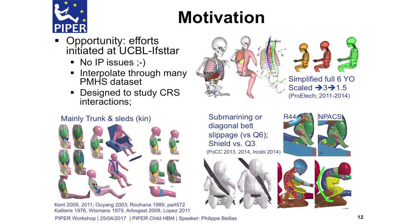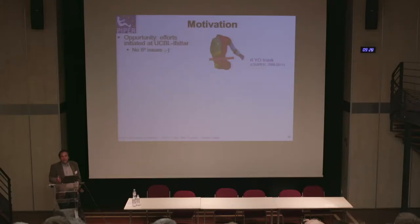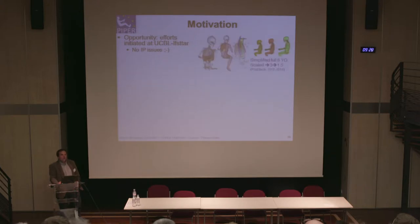A second motivation was opportunity. There was a project funded by the European Commission a few years back called Casper, where we started working on these human models. There were actually many IP issues — so many that everybody left with whatever they had done. What we did had no IP issue because it was ours, but what other people did was theirs. That's a first introduction to the open source theme that will come later.